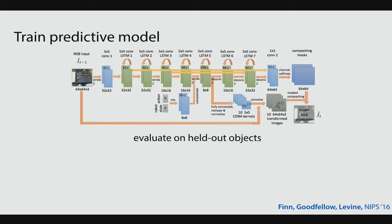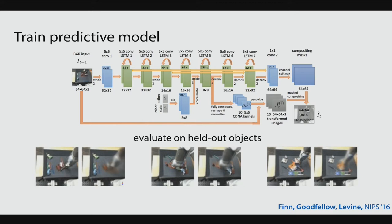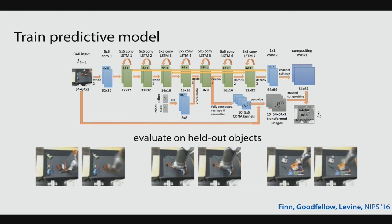We trained on the dataset and evaluated on objects the robot hadn't seen before. On the left are the ground truth videos, and on the right are the model's predictions. The first thing you notice is they're quite blurry — that's because the model is trained with an L2 loss with mean squared error, so it encodes uncertainty as blur. But more importantly, it's able to capture how objects and the arm are moving in the image.